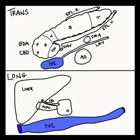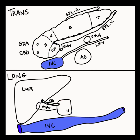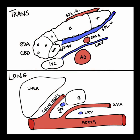The same is true for the head of the pancreas. In transverse, identify the IVC and the portal confluence. You may also see the gastroduodenal artery and the common bile duct — these are all key landmarks for the head of the pancreas. Identifying the IVC in the sagittal plane and visualizing the portal vein superior to it will also bring you to the head of the pancreas.